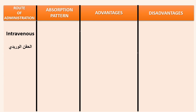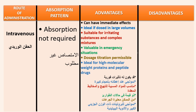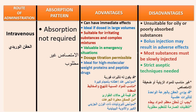Intravenous route: absorption is not required, it can have immediate effects, ideal if dosed in large volumes, suitable for irritating substances and complex mixtures, and valuable in emergency situations. Dosage titration is permissible and ideal for high molecular weight proteins and peptide drugs. It is unsuitable for oily or poorly absorbed substances, and bolus injection may result in adverse effects.